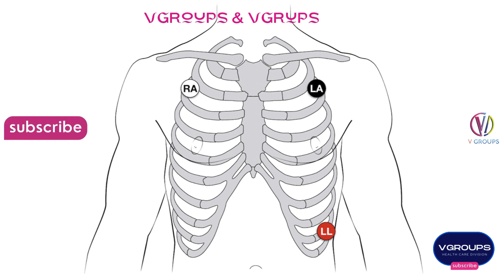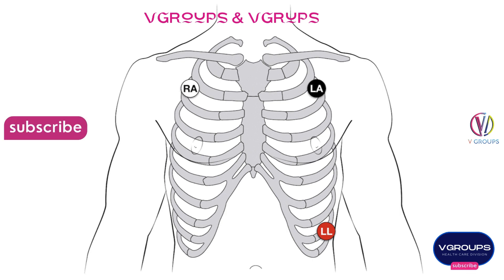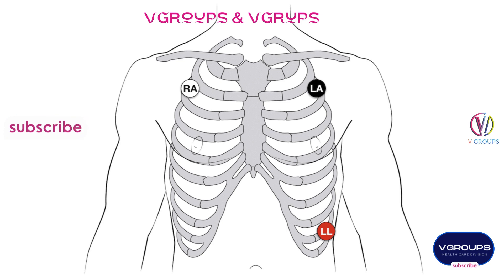The augmented vector leads allow interpretation of specific areas of the heart. Inferior leads are II, III, and AVF. Upper lateral leads are I and AVL. Anterior leads V5 and V6 cover the lateral region, while V1–V4 cover the anterior region. This is the 12-lead precordial lead placement overview.